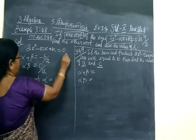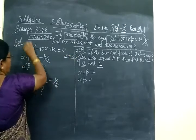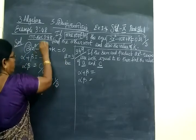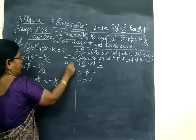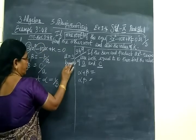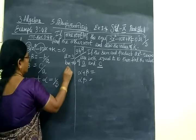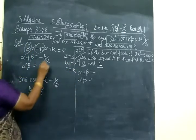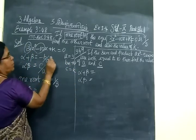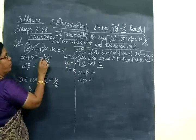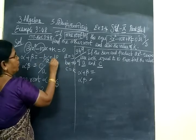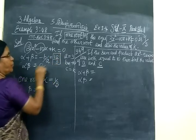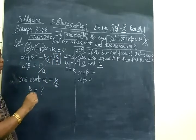Here, what is a? a equals 3. Then b equals minus 10. Then c equals k. Now substituting the values: sum of the roots equals minus b by a, which is 10 by 3.